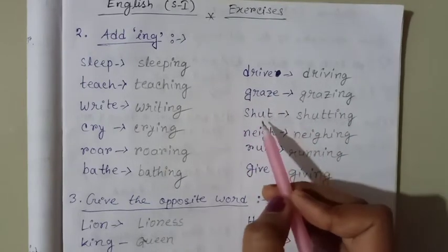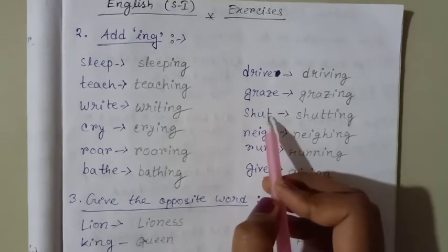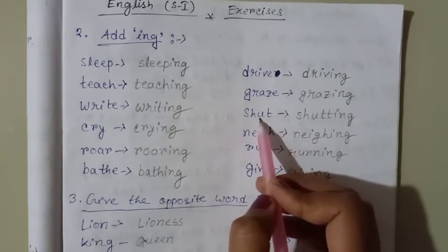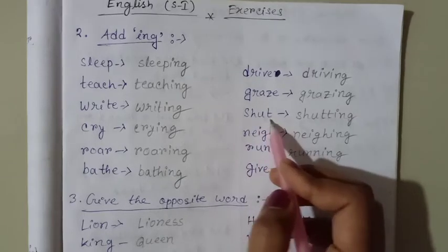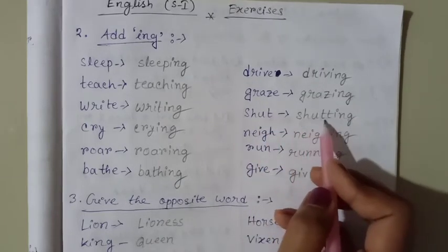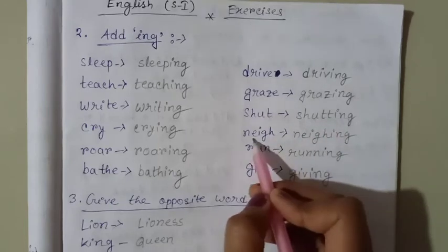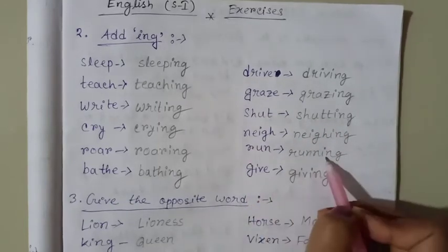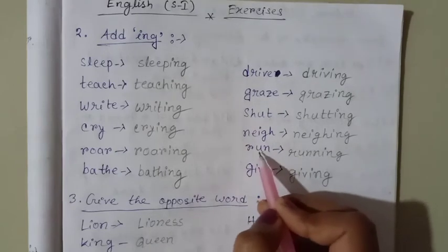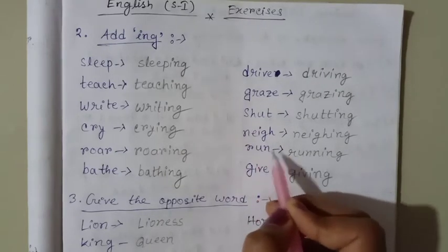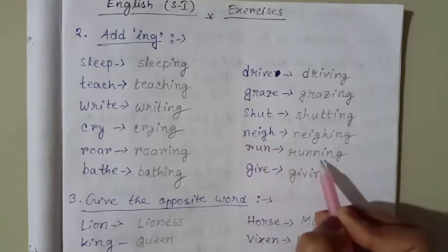Here, the last letter is consonant and before the consonant there is a vowel. So we have to double the last consonant. Here also the letter before the last consonant is a vowel. So we have to double the last consonant.